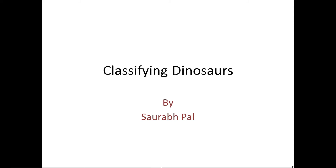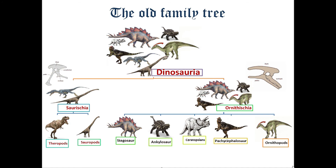Hi everyone. I am going to discuss classification of dinosaurs in this lecture. Dinosaur is a monophyletic group, meaning all kinds of dinosaurs ever have come from a single common ancestor. Although we are not sure of the species that gave rise to all dinosaurs in the early Triassic, that species might be like Eoraptor or Coelophysis.